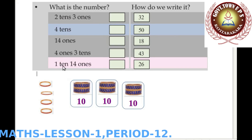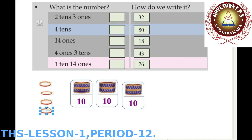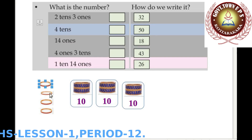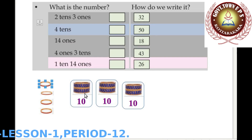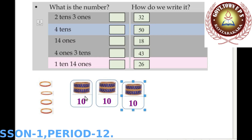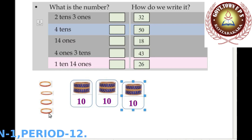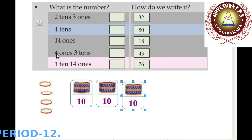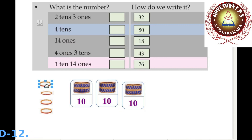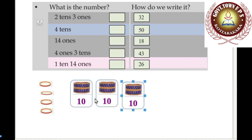Four ones and three tens: four ones — 1, 2, 3, 4 — and three tens — 1, 2, 3. Three tens: 10, 20, 30. Thirty and four: 30 plus 4 equals 34.